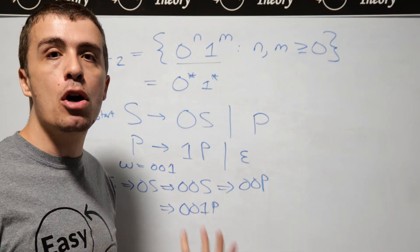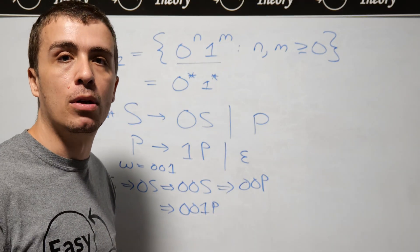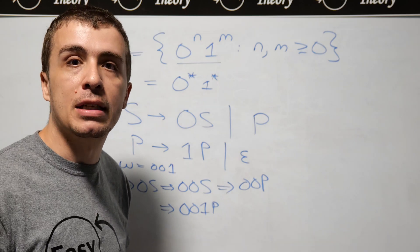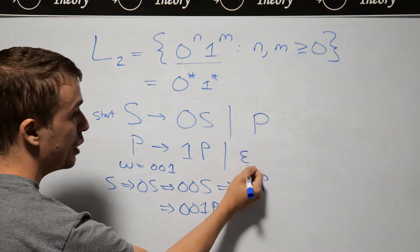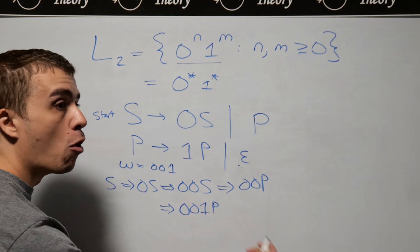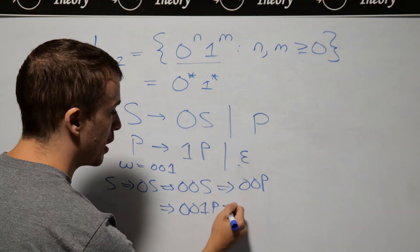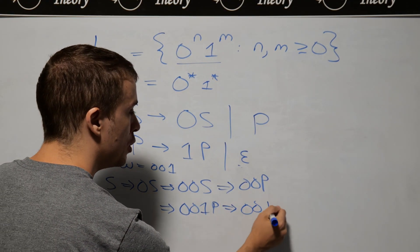And we need to make a string with no variables at all, only terminals, because that's what the language of a context-free grammar is. And so now I'm going to apply this rule right here by making P go away. In other words, changing it to be the empty string, which is exactly what this is.